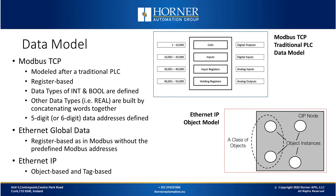Modbus also includes an addressing scheme that traditionally is a five-digit address consisting of four different types of data: coils, inputs, input registers, and holding registers. Ethernet Global Data was also created in the era of register-based PLCs, in the 1990s by GE, so like Modbus it's based upon boolean and word-type variables, but has been later adapted to include 32-bit data types. Unlike Modbus, Ethernet Global Data doesn't have the specific predefined Modbus addresses. Ethernet IP was adapted in the early 2000s and it's an object-based and tag-based model, as opposed to register-based.